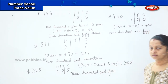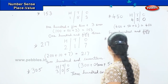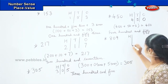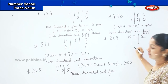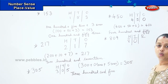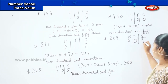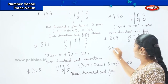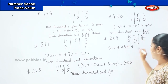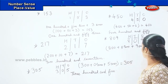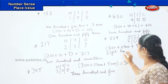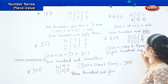Here comes your next question. The number is eight hundred and nine. H, T, O: what will come in H? Eight. What will come in T? Zero. And what will come in O? Nine. How will you show it in the expanded form? It is eight hundred plus zero tens plus nine ones, which equals to eight hundred and nine.